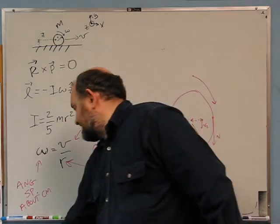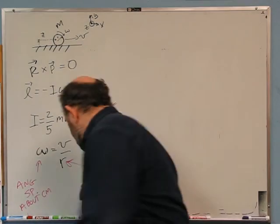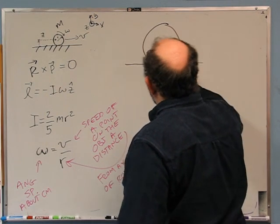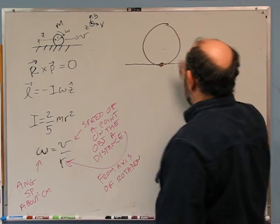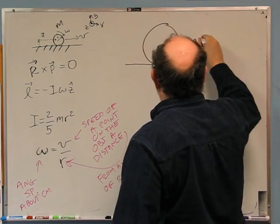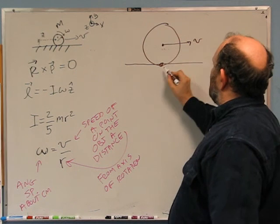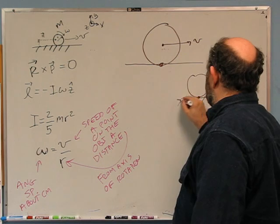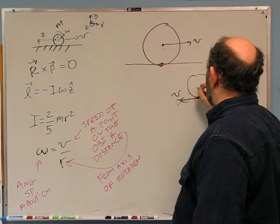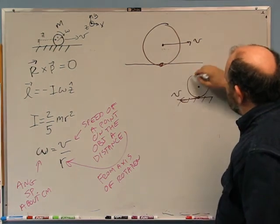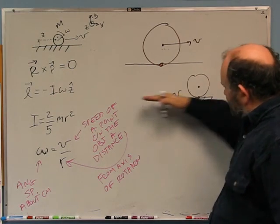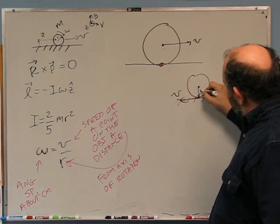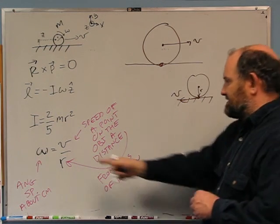So you always have to think about it. In this case, this ball is rolling without slipping, which means this contact point is at rest with respect to the ground. The center of mass is moving at speed v. That's the same as saying the ground is moving at speed v relative to the center of mass. So v divided by r really is the omega we want to use here.